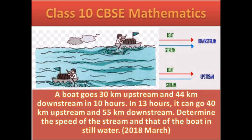The question is: a boat goes 30 kilometers upstream and 44 kilometers downstream in 10 hours. In 13 hours it can go 40 kilometers upstream and 55 kilometers downstream. Determine the speed of the stream and that of the boat in still water. This question appeared in the 2018 March board examination.